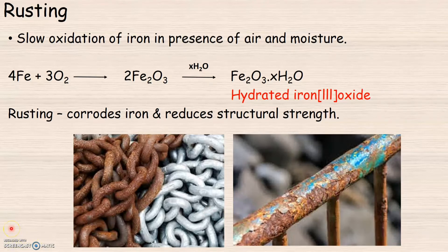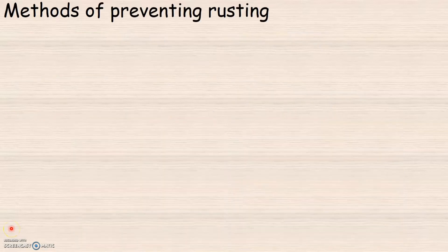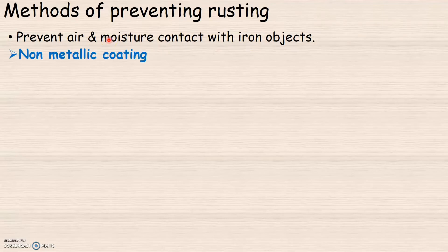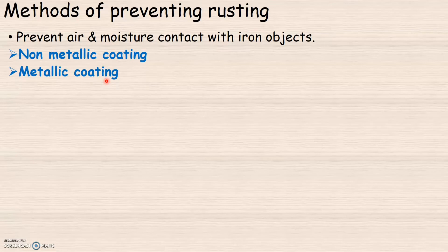Let us learn how we can prevent iron objects from getting rusted. The only way to prevent rusting is to prevent iron surfaces from getting exposed to air and moisture. We can do this by the application of a non-metallic coating or a metallic coating on the surface of iron objects.